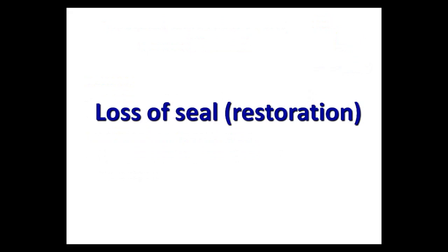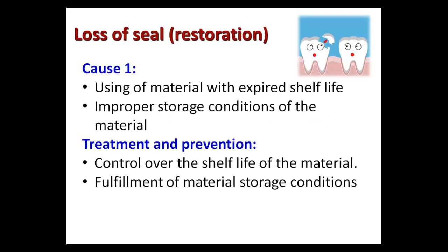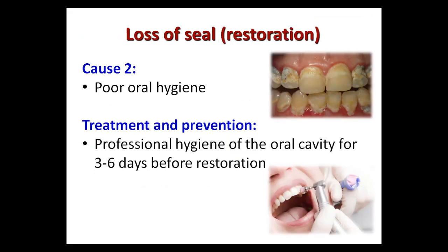The next group of errors is loss of seal or restoration. Cause number one is using material with an expired shelf life or improper storage conditions. Prevention requires controlling the shelf life of materials and ensuring proper fulfillment of material storage conditions.